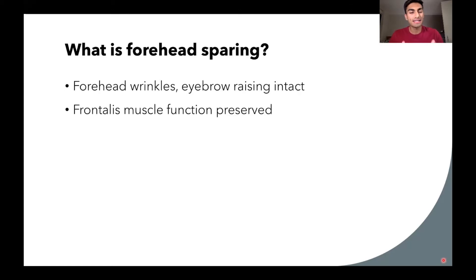So first, what is forehead sparing? When we say the forehead is spared, we mean that it's spared from damage so that its function is still preserved. For example, the forehead wrinkles and the eyebrow raising will remain intact, and that's because the forehead muscle, which is called the frontalis, that function is preserved. If the forehead is spared, we will still see wrinkles and the eyebrows will still be able to raise because the function is still intact.